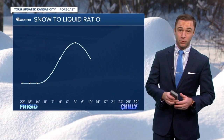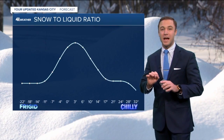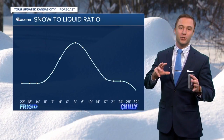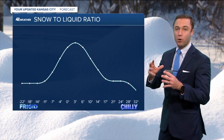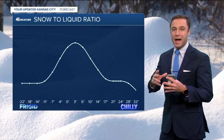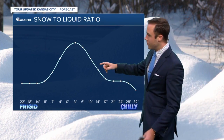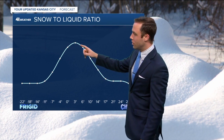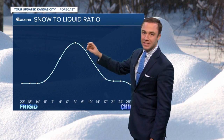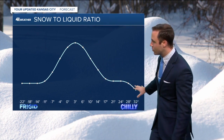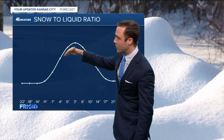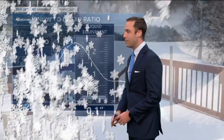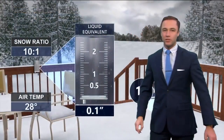Now let's go a little bit deeper and talk about the snow-to-liquid ratios. It all has to do with what your air temperature is. The sweet spot to get the most snow out of the amount of liquid is right when the temperature is just above 0 degrees Fahrenheit. You can see it increases until about 0, and then it starts to actually go down once you get to about negative 22.